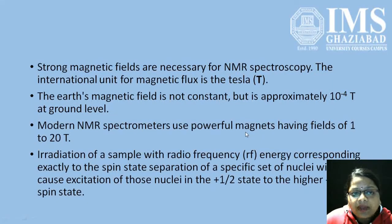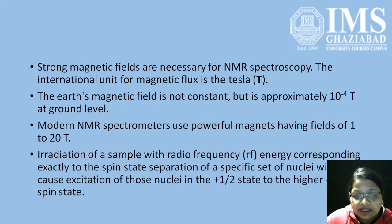Strong magnetic fields are necessary for NMR spectroscopy. The international unit of magnetic flux is tesla. Modern NMR spectroscopy uses powerful magnets having fields of 1 to 20 tesla. Irradiation of the sample with radio frequency energy corresponding exactly to the spin separation of the specific set of nuclei causes excitation of those nuclei from the plus 1/2 state to the minus 1/2 higher energy state.